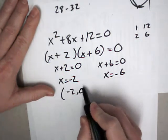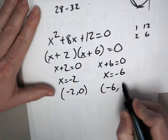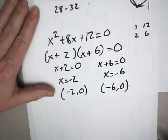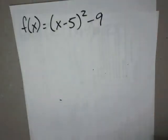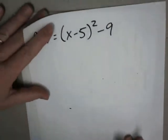So negative 2, comma, 0. Negative 6, comma, 0. That's your two x-intercepts. I'm going fast because you can always rewind this, pause it, and so forth.